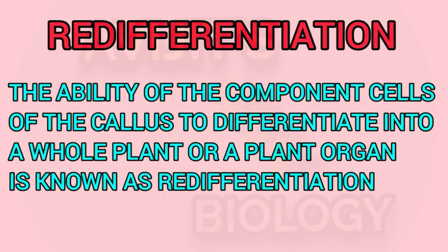Now, what is redifferentiation? The ability of the component cells of the callus to differentiate into a whole plant or a plant organ is termed as redifferentiation. In short, the ability of a differentiated cell to form a whole organ or whole organism is known as redifferentiation. Theoretically, all living cells can revert to an undifferentiated status through the dedifferentiation process.